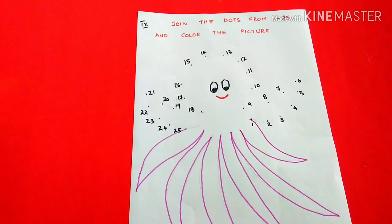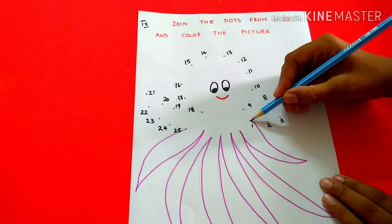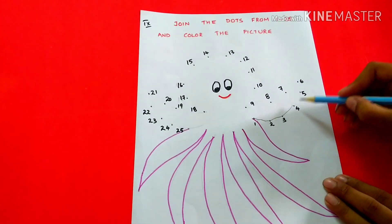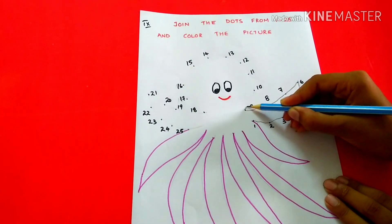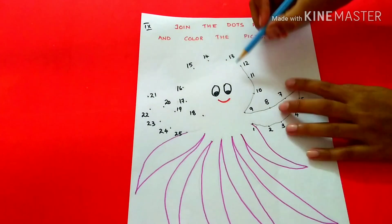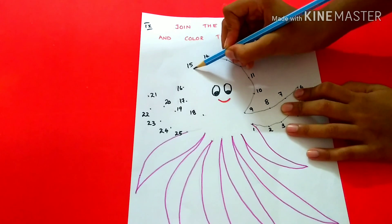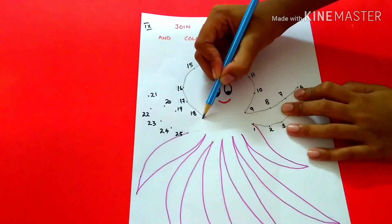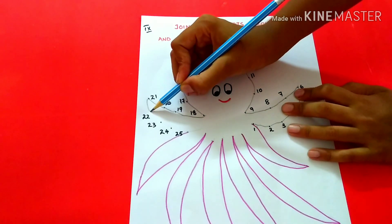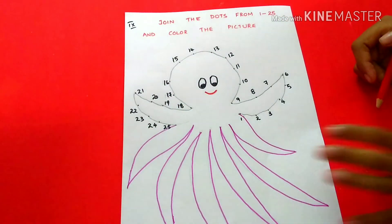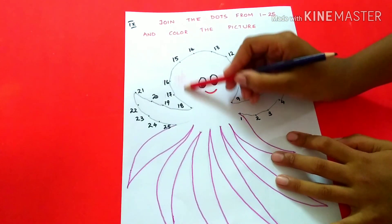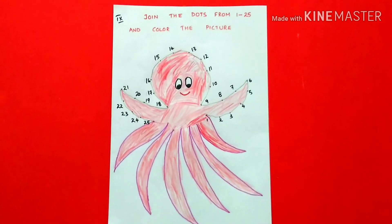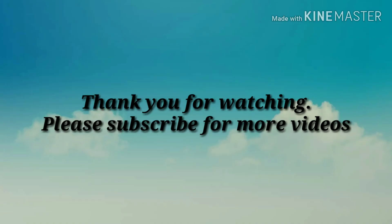Join the dots from 1 to 25 and color the picture. 1, 2, 3, 4, 5, 6, 7.